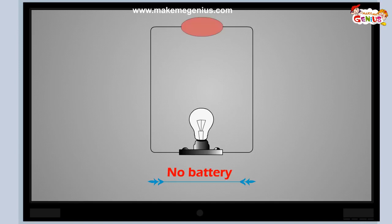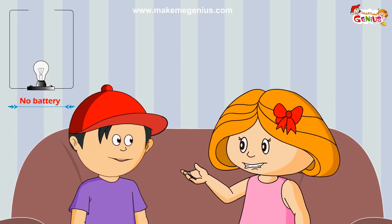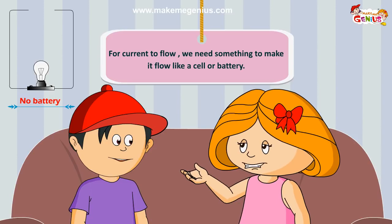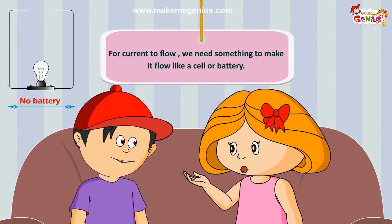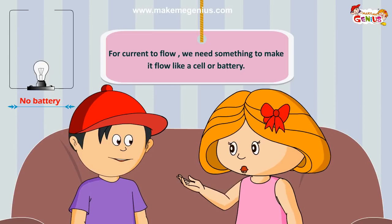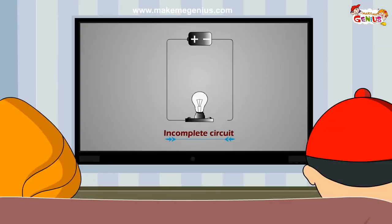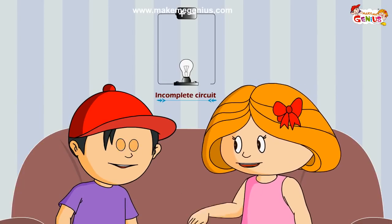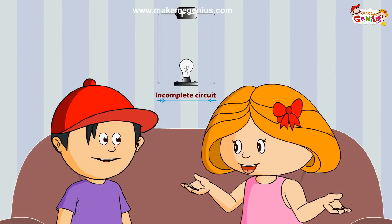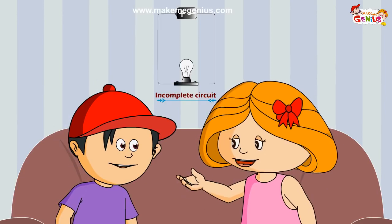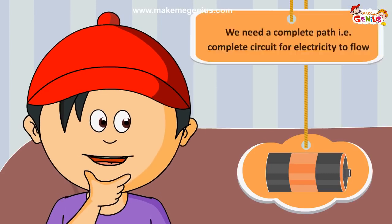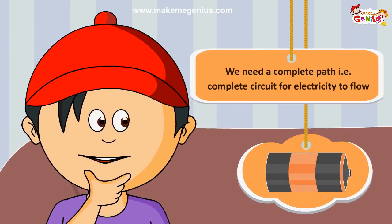Now look at this. There is no battery in this. If there is no battery, no electricity will flow. So the first condition for the flow of electricity in a circuit is that there should be something to make the electrons flow. Now look at this second circuit — what is missing? The circuit is not complete. This is an incomplete circuit; you need a complete path for the current to flow in. This is called an electric circuit. You need some power source like a cell or a battery, and you need a full circuit for electric charge to flow.